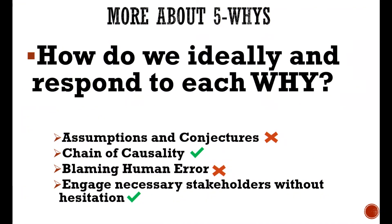Let's review some tips on how to answer the question each time you ask why. There should be no assumptions or conjectures — always provide factual details. Do not jump ahead but rather provide answers step by step: the nearest cause of the problem first, then the cause of that, and so on until you arrive at the final root cause. Also, blaming human error is a strict no-no. Answering that 'John Smith did this wrong' gets you nowhere, as human errors are symptoms of other actual root causes. Use the actual cause that led to the symptom of human error.